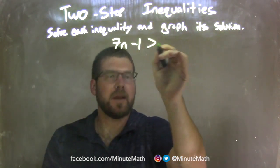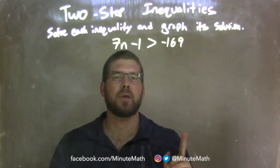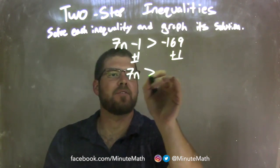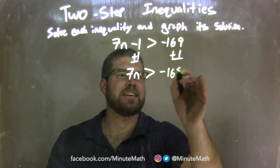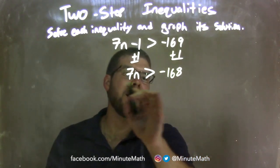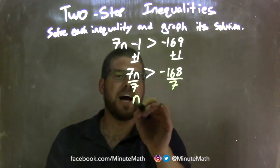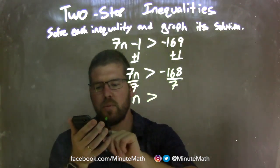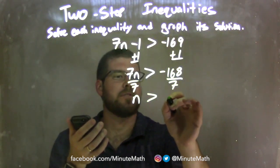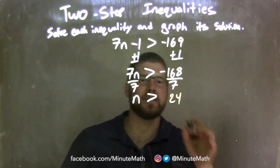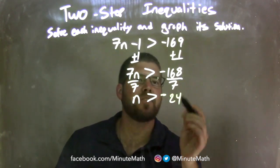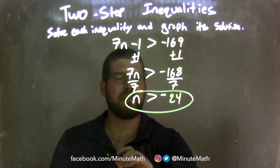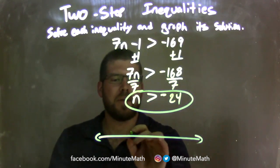7n minus 1 is greater than negative 169. My first step: add 1 to both sides, leaving me with 7n is greater than negative 169 plus 1, which is negative 168. Now I divide both sides by 7 to get n by itself. Using a calculator: 168 divided by 7 is 24. We know that's going to be negative 24, because a negative divided by a positive is a negative. So n is greater than negative 24.